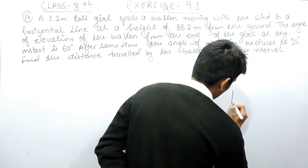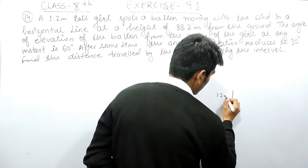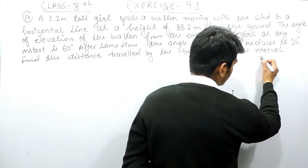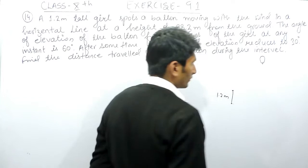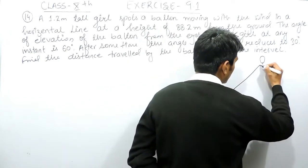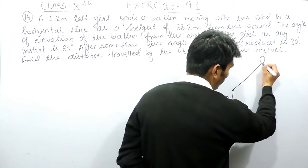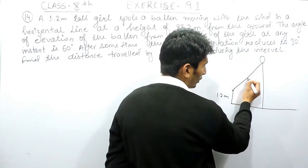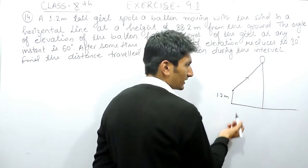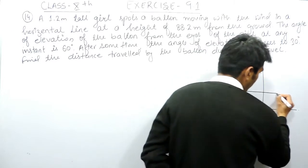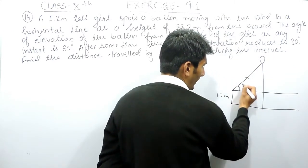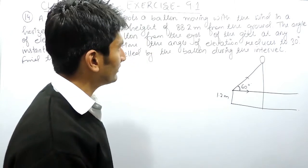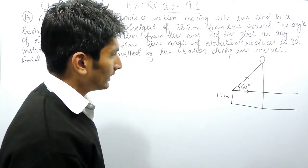In this question it is given that there is a girl which is 1.2 meters tall — this is the height of the girl — and from here she sees a balloon. The angle of elevation: if I draw a straight line, this will be the line of sight for the girl, and if I draw a horizontal line from here, the angle between this horizontal line and the line of sight is the angle of elevation. This is given as 60 degrees.